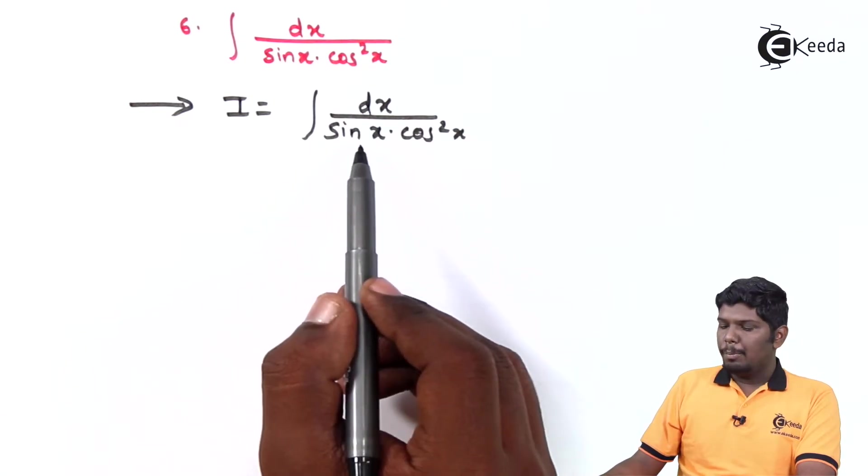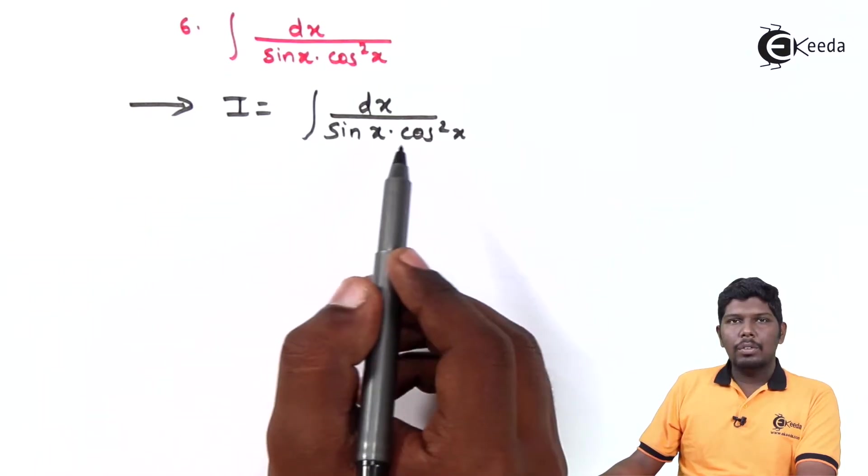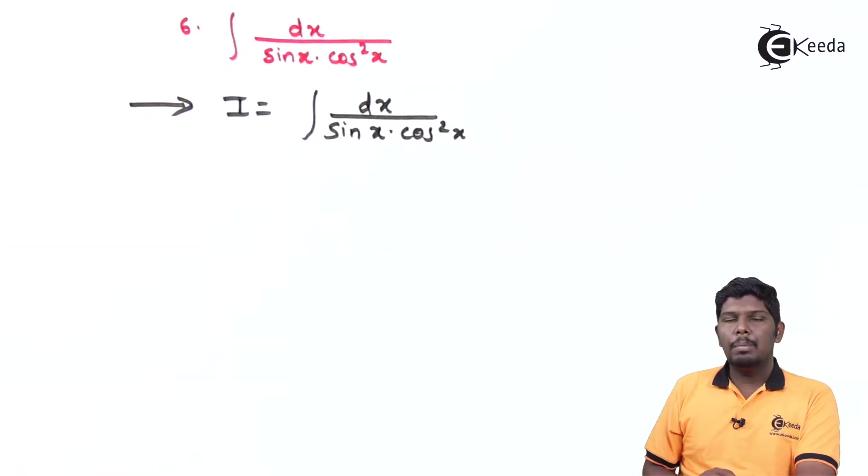Here in the denominator, we have product of sin and cos. In the previous videos, we have already discussed that whenever we have a product of sin and cos in the denominator, we must arrange numerator also in terms of sin and cos.